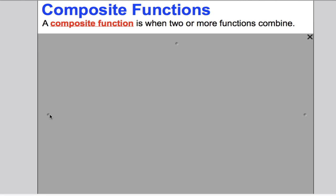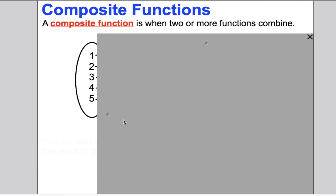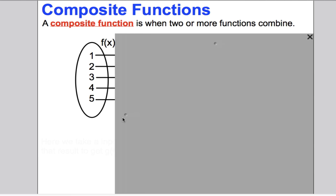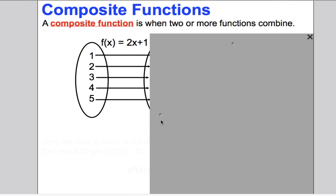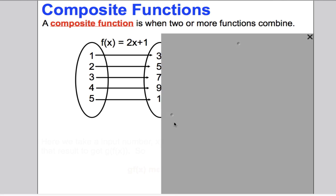To see how this materialises, imagine we have a function where the domain is the numbers 1, 2, 3, 4 and 5, and our function is F(x) = 2x + 1. So you double your input number and add 1. Our output numbers would be 3, 5, 7, 9 and 11. So we've got our usual function F applied to numbers 1 through 5 using the F rule, giving us 3, 5, 7, 9, 11.